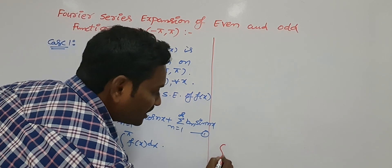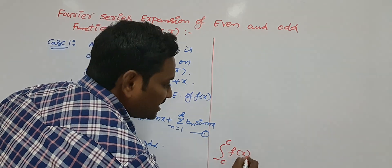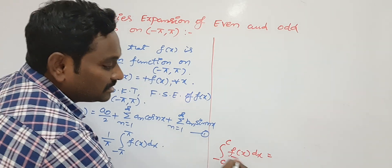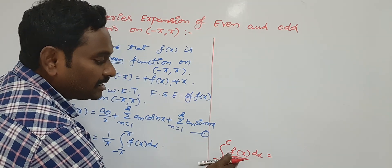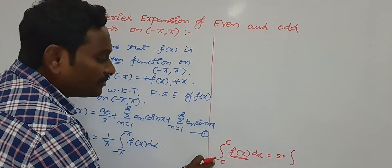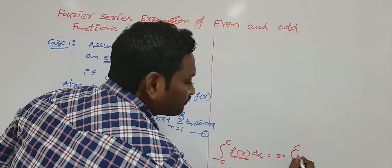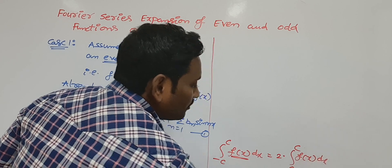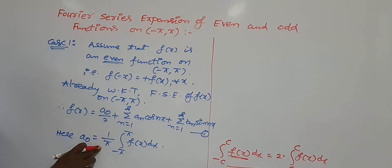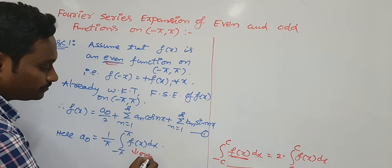Whenever the limits are from -c to +c, we use this formula: ∫₋c^{+c} f(x) dx. The value of this integration depends upon the function. Suppose it is even, the result is 2 times ∫₀^c f(x) dx. Suppose it is odd, the result is 0.